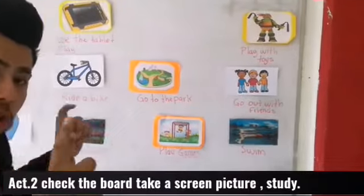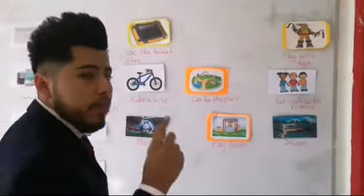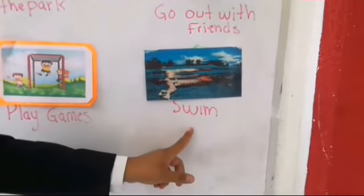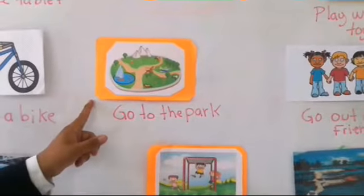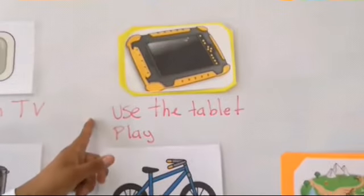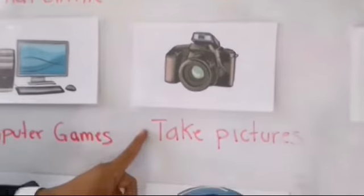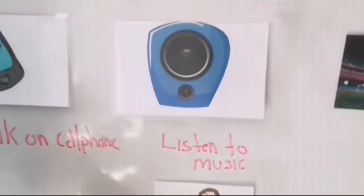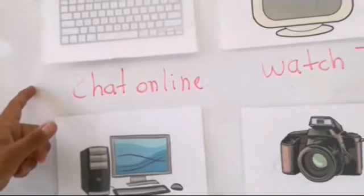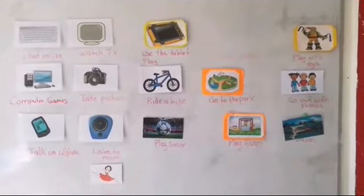Activity number two: check on the board, take a picture, and please study the activities. Let's check them quickly: play with my toys, go out with friends, swim, go to the park, play games, play soccer, ride a bike, use the tablet or play with the tablet, watch TV, take pictures, listen to music, dance, talk on the cell phone, play computer games, and chat online. Please take a picture and study them — that is your activity number two.